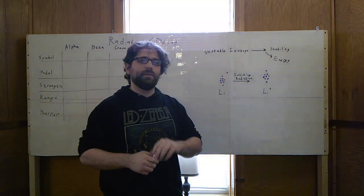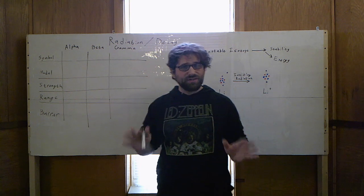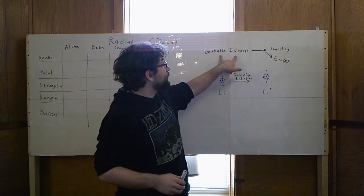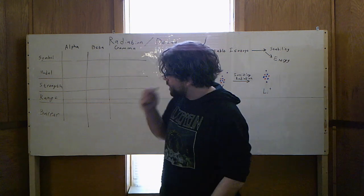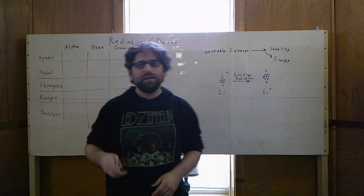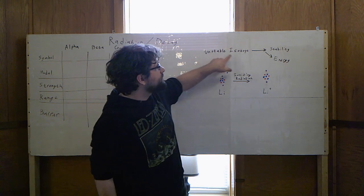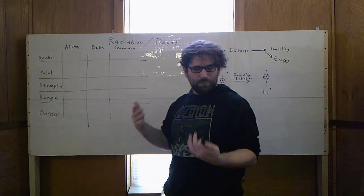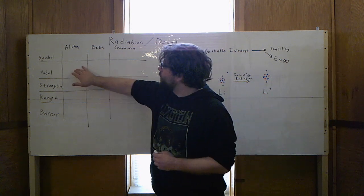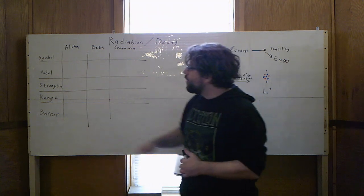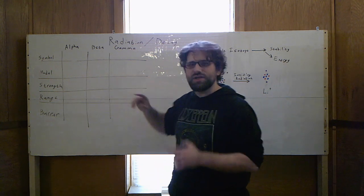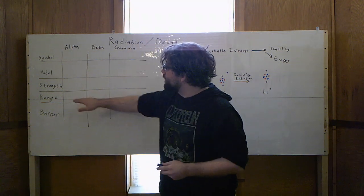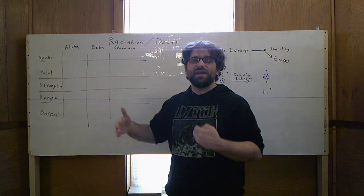We're going to look at three different examples of radiation — unstable isotopes achieving stability and releasing radiation. We're going to look at how we write the symbol for each kind of radiation, how we model it, the strength of that radiation (which is really how well it's able to ionize other atoms), and then the range and the barriers — what can block that type of radiation.